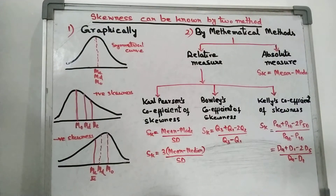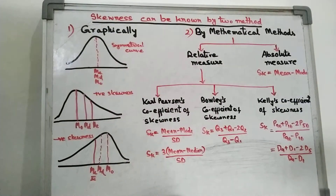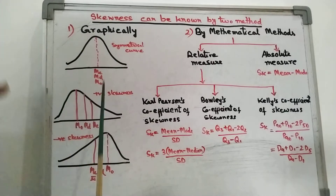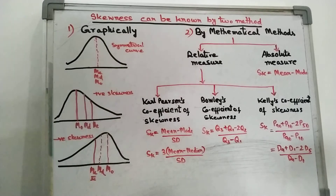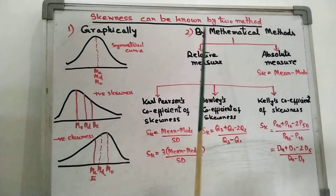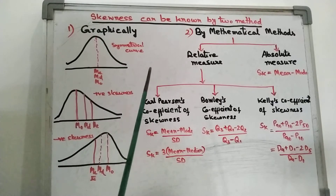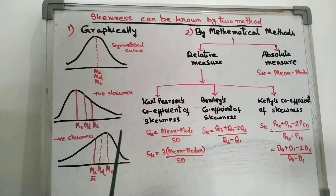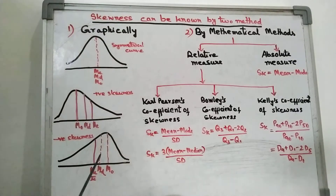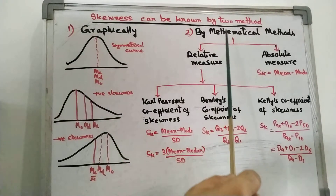But now let us go to the mathematical method. Why do we need the mathematical method? Because here we cannot find the magnitude of skewness, and if there is slight skewness it cannot be detected by naked eyes. So we need mathematical method also, which helps us to find the magnitude of skewness — we get the actual magnitude of the skewness. If we need to compare two distributions, then it is very easy using mathematical methods.